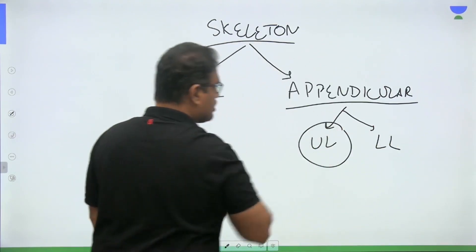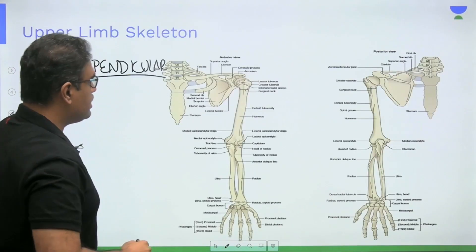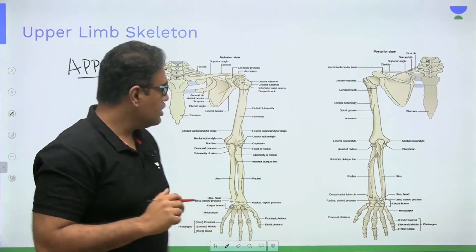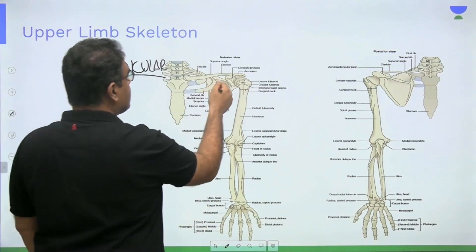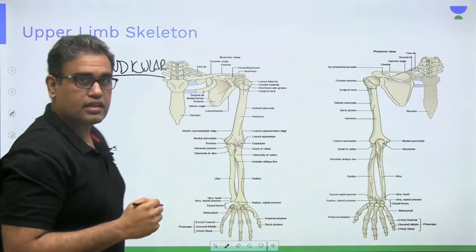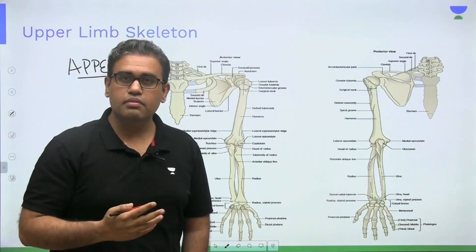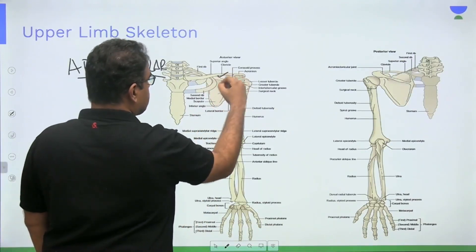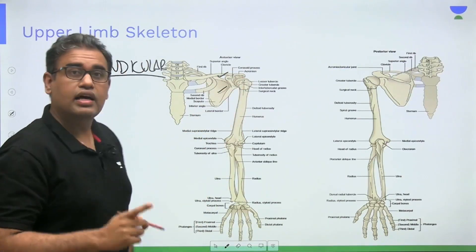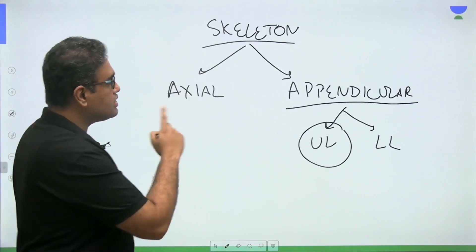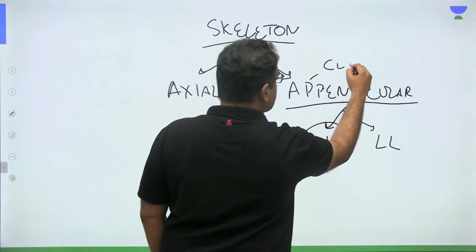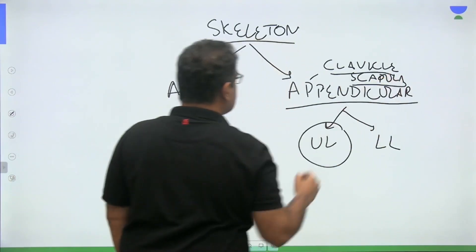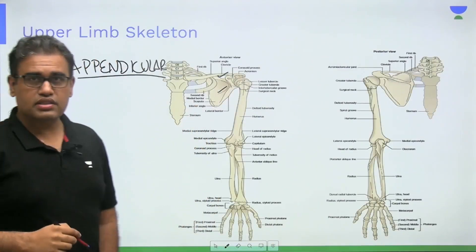The appendicular skeleton includes the upper limb bones and the lower limb bones. A common confusion is whether the scapula and clavicle are part of the appendicular or axial skeleton. The answer is that the clavicle and scapula are both parts of the upper limb, so they are part of the appendicular skeleton.